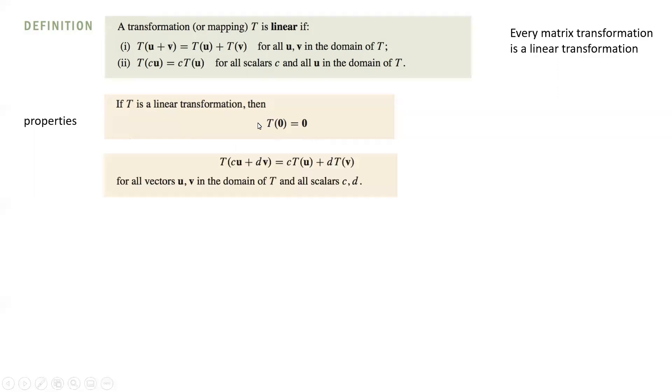Another interesting property is that linear transformation of linear combination of two vectors will be equal to sum of weights times the transformation of vectors.